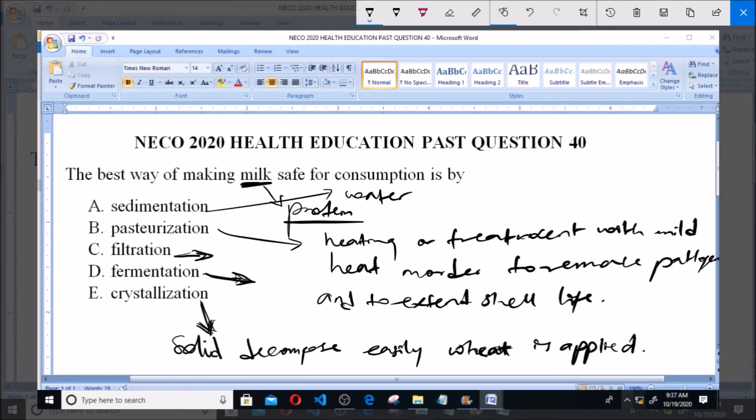So, the correct answer to this question, like I have said, is option B, pasteurization. It is the best method used to make milk safe for consumption because it helps to remove pathogens and also extend the shelf life of milk. Thank you and God bless you and be sure to subscribe to the channel for more videos and past questions.